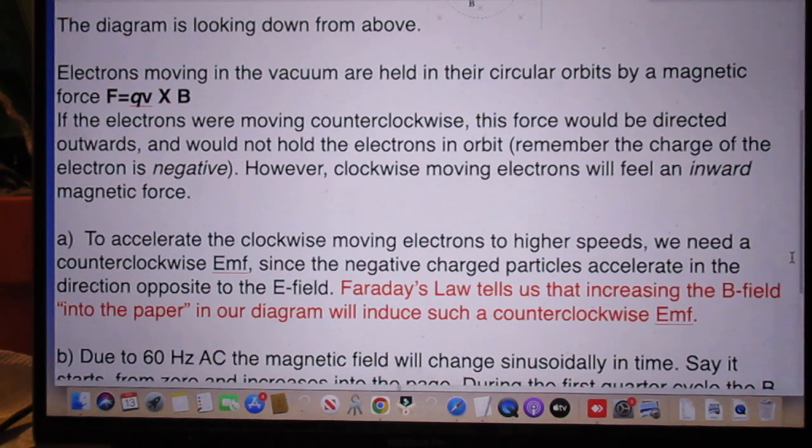If the electrons were moving counterclockwise, this force would be directed outwards and would not hold the electrons in orbit. Remember the charge of the electron is negative. However, clockwise moving electrons will feel an inward magnetic force.